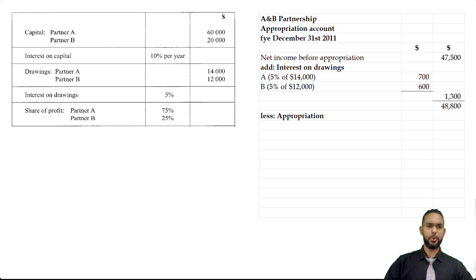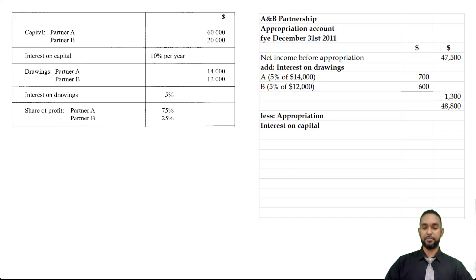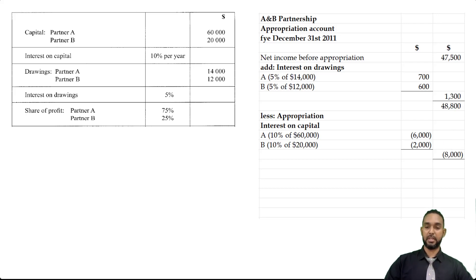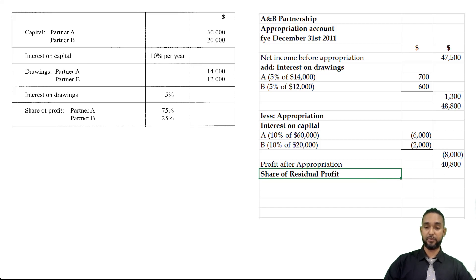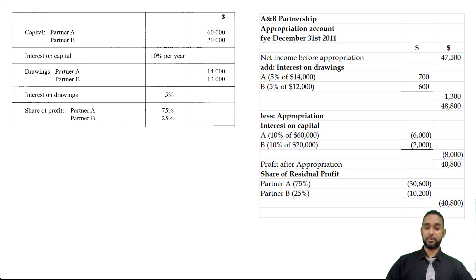Now we deal with the appropriation. We only have one item to appropriate: interest on capital at 10% per year. Partner A's capital is $60,000, so interest on capital is $6,000. Partner B's capital is $20,000, so interest is $2,000. Totaling $8,000, which we subtract from $48,800 to give $40,800. We then share the remaining profit: 75% to partner A is $30,600, and 25% to partner B is $10,200. Adding back up confirms the $40,800, with no profit left in the appropriation account.